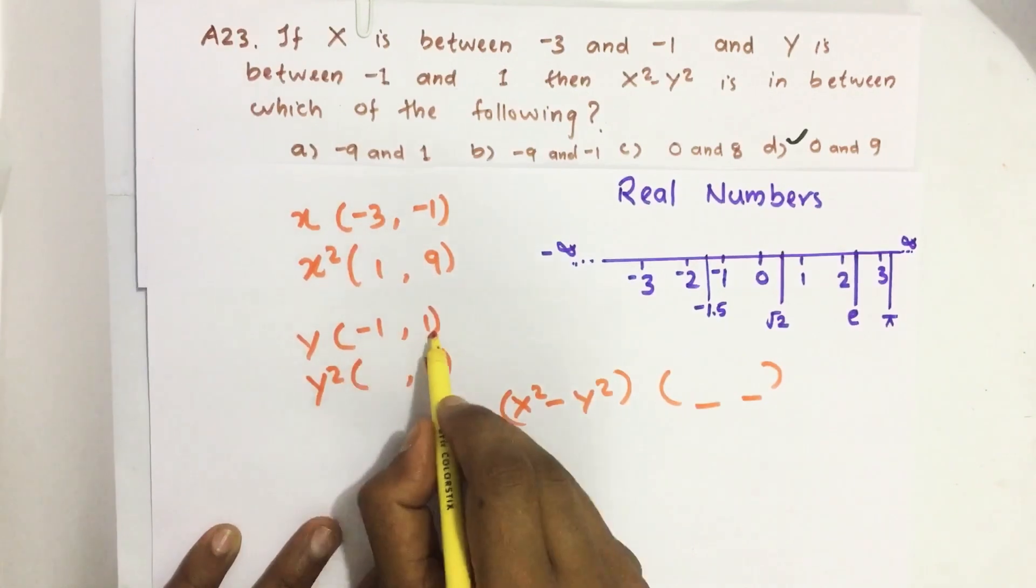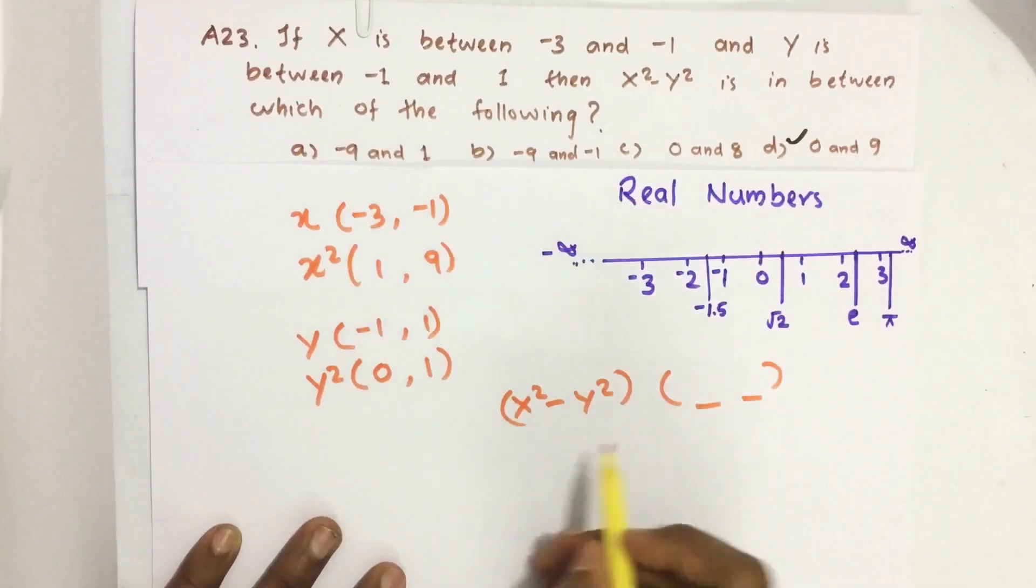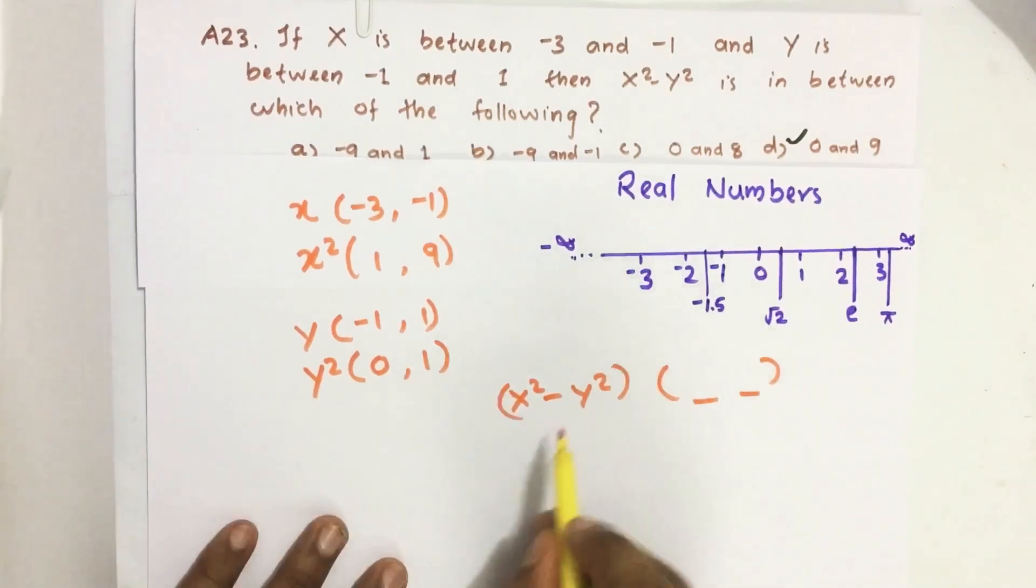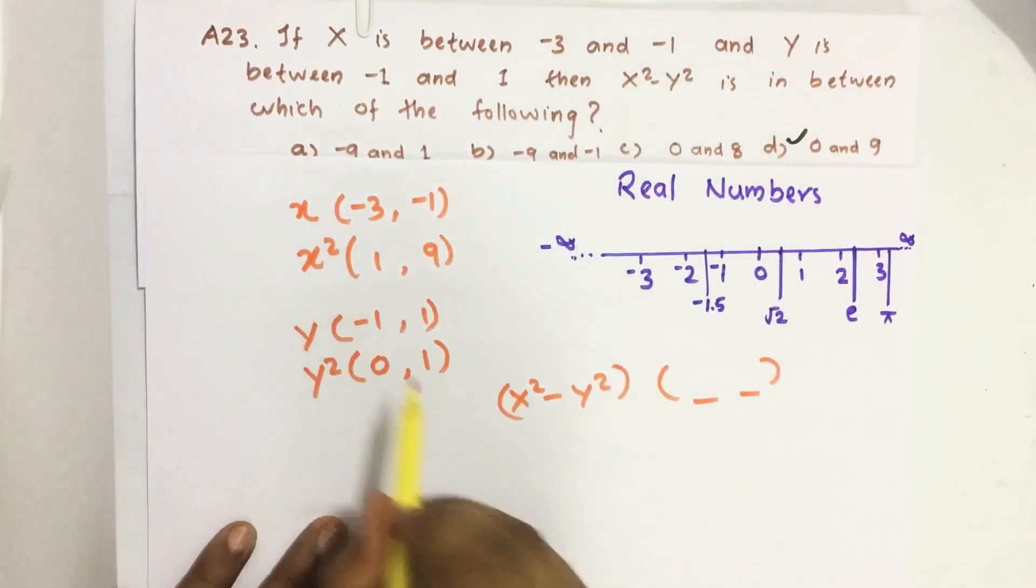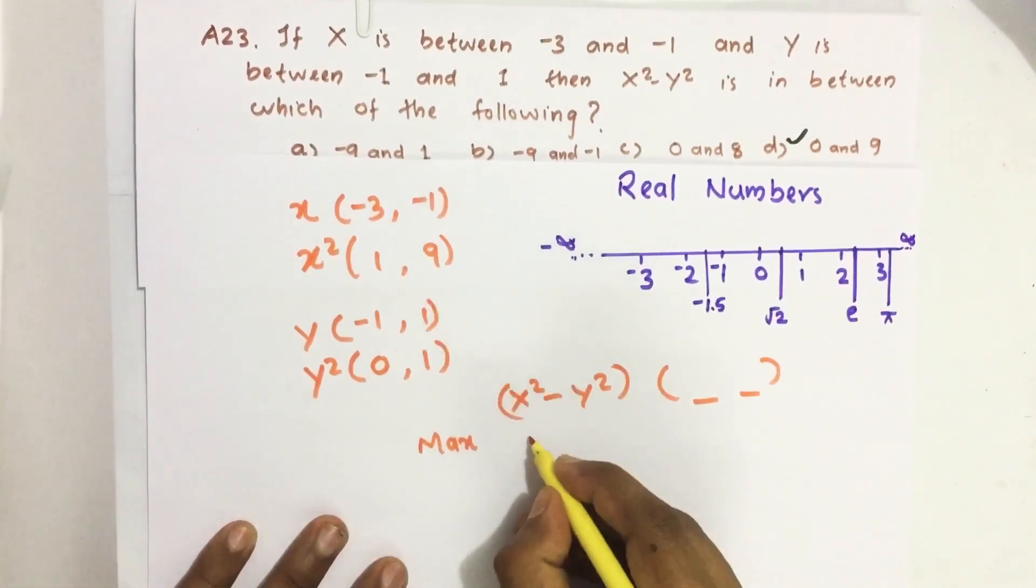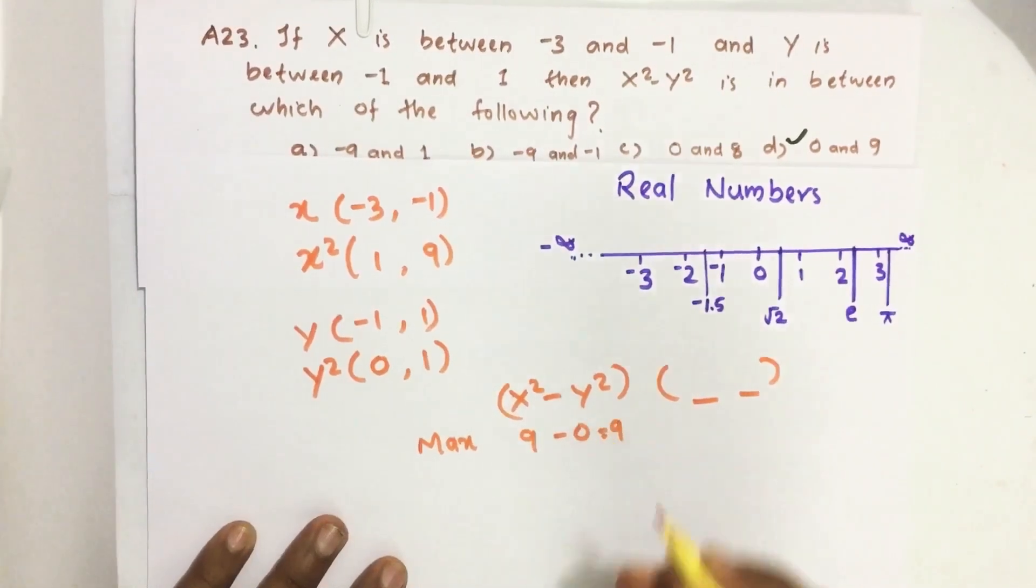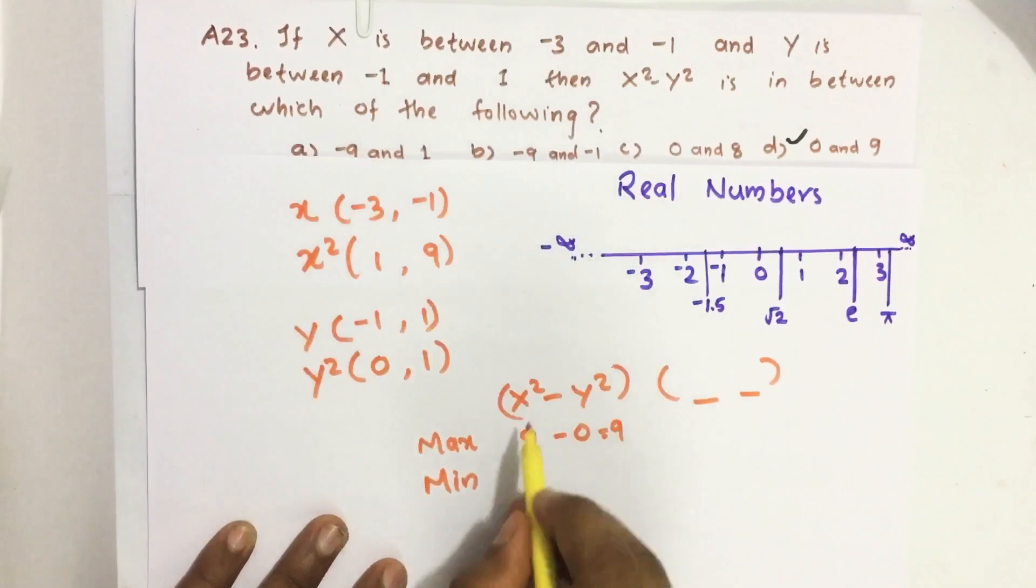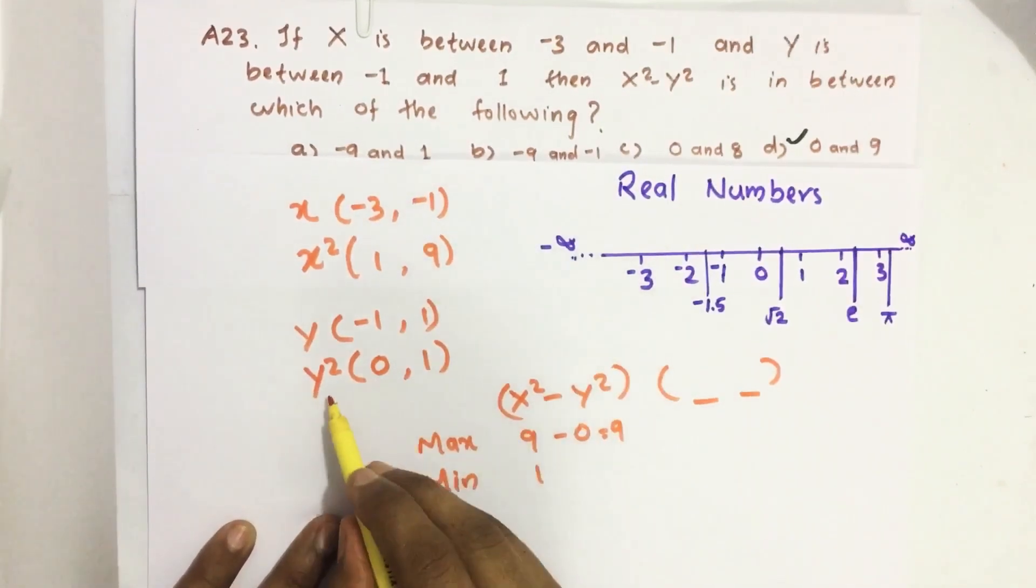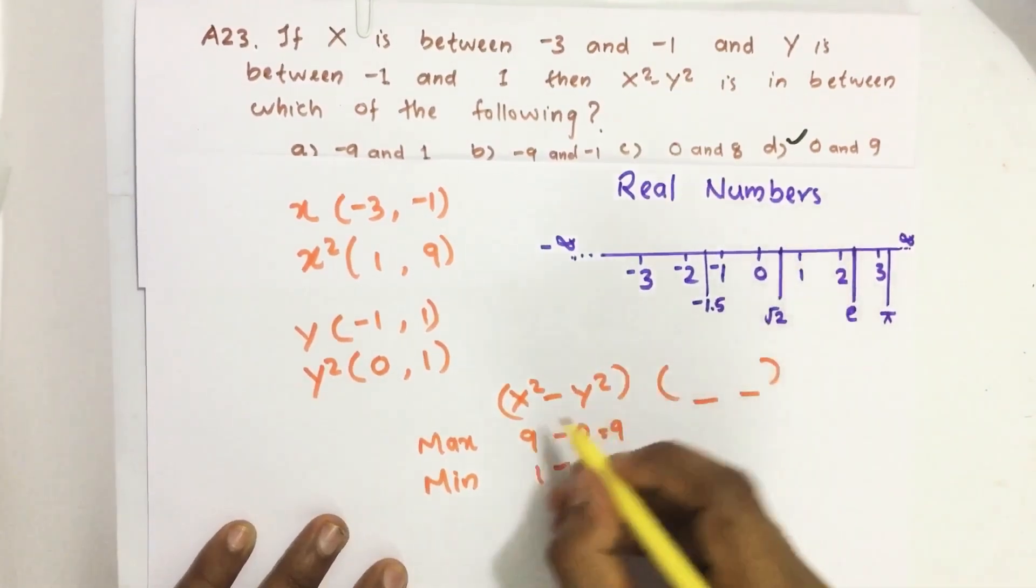So here minimum value, as it is in between negative and positive value, its minimum value will be 0. Now let us find the upper limit and lower limit for this x² - y². To find the upper limit, the maximum value, take the maximum value of x² which is 9 and minimum value of y² which is 0.